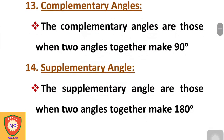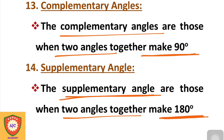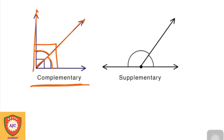The next type of angle is the complementary angle and supplementary angle. The complementary angle is formed when two angles add up to 90 degrees. This is the 90-degree form of complementary angles.